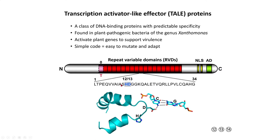So what do these proteins look like? They have large repeats called repeat variable domains, or RVDs. They all have the very same protein sequence, with the exception of two residues at positions 12 and 13 out of this 34 amino acid repeat. The structure of the repeats is a helix-turn-helix motif. These two residues specify which individual base each domain binds to. Zinc finger domains bind one domain to three bases, but TALEs are even better because one domain binds to just one base.